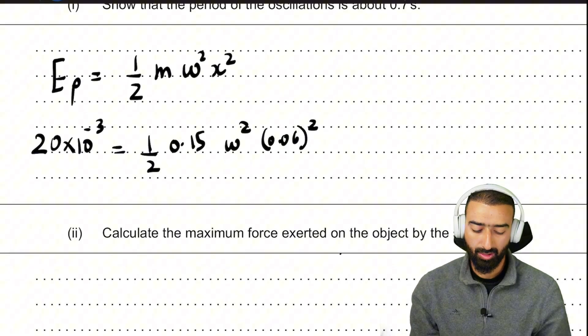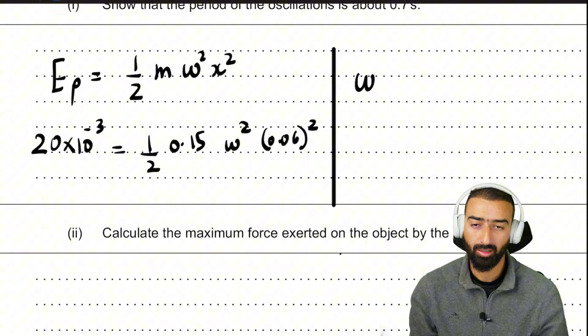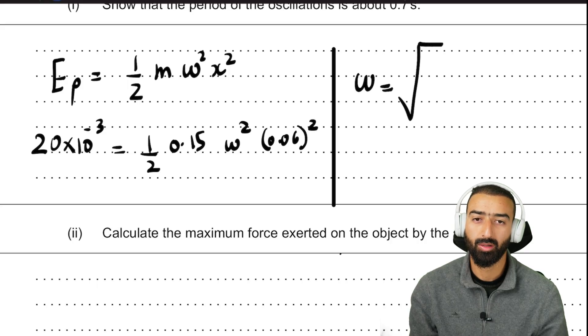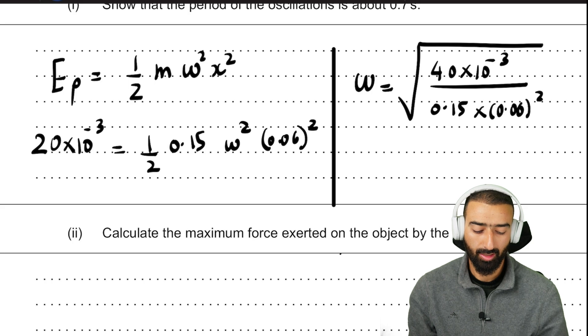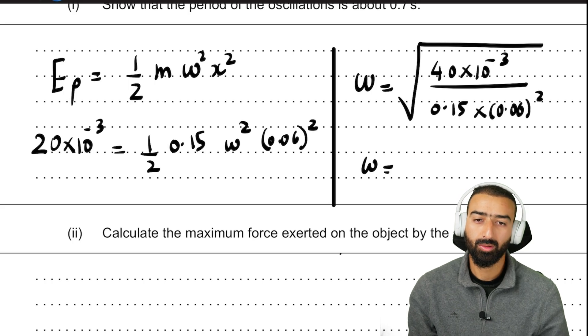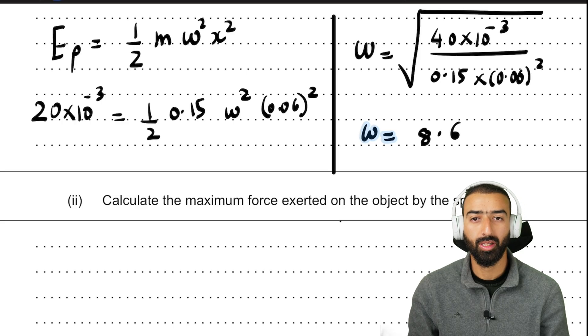So we can rearrange this equation for omega. If we do that, we get omega equals square root 40 into 10 to the minus 3 divided by 0.15 into 0.06 square. If we plug this into our calculator, we get a value of about 8.6 radians per second.